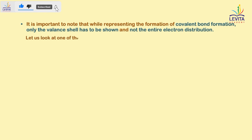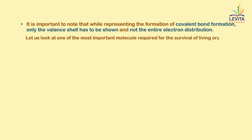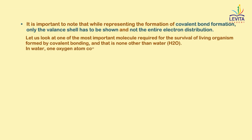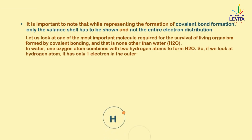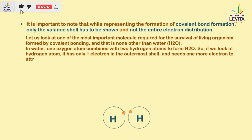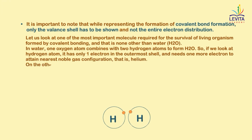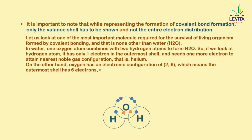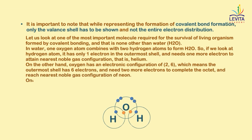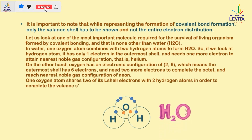Let us look at one of the most important molecules required for the survival of living organisms formed by covalent bonding — water. In water, one oxygen atom combines with two hydrogen atoms to form H2O. Hydrogen has only one electron in the outermost shell and needs one more electron to attain the nearest noble gas configuration, that is helium. Oxygen has an electronic configuration of 2, 6, which means the outermost shell has six electrons and needs two more to complete the octet and reach the nearest noble gas configuration of neon. So, one oxygen atom shares two of its L-shell electrons with two hydrogen atoms, as shown by the electron dot structure.